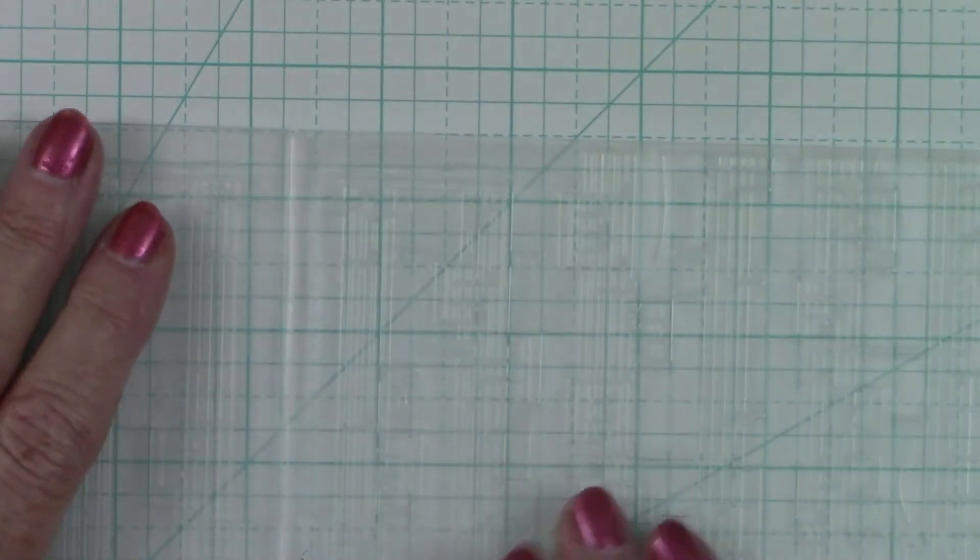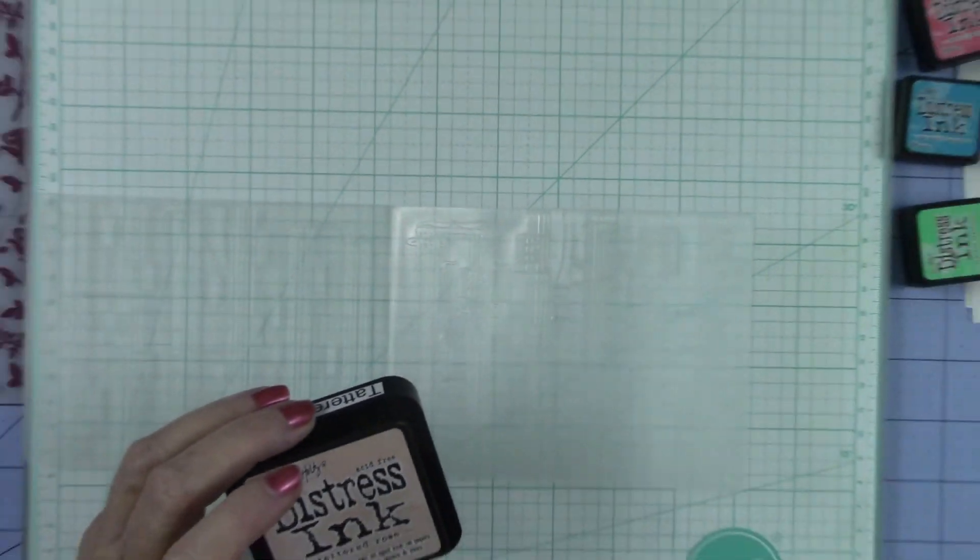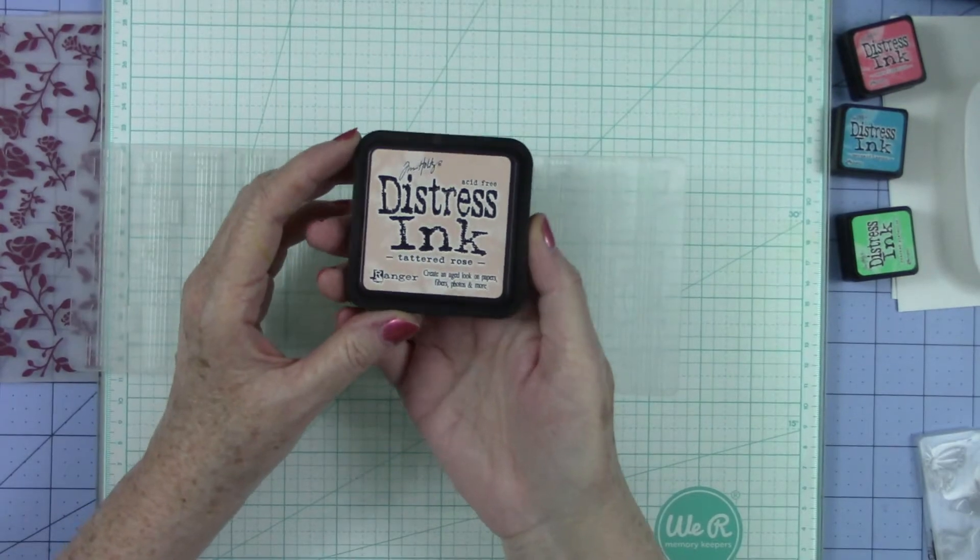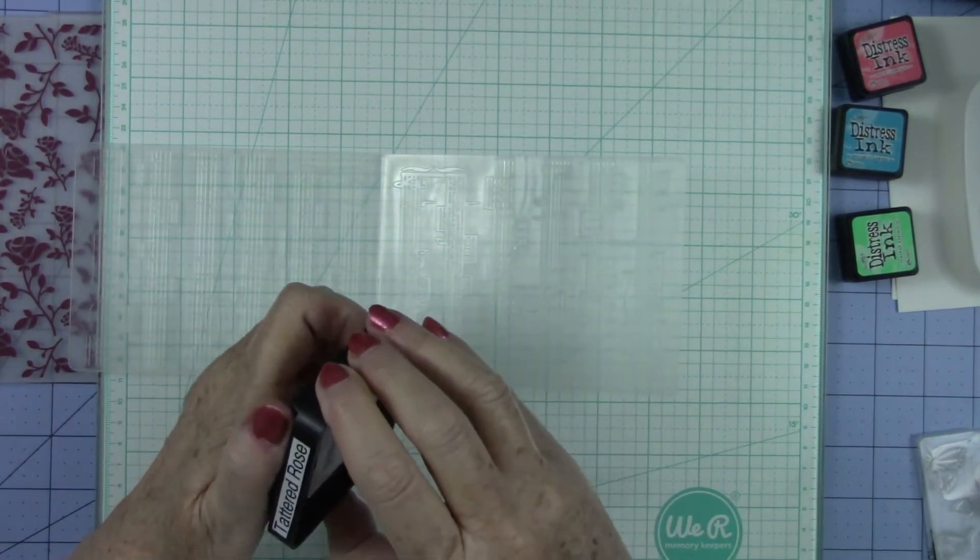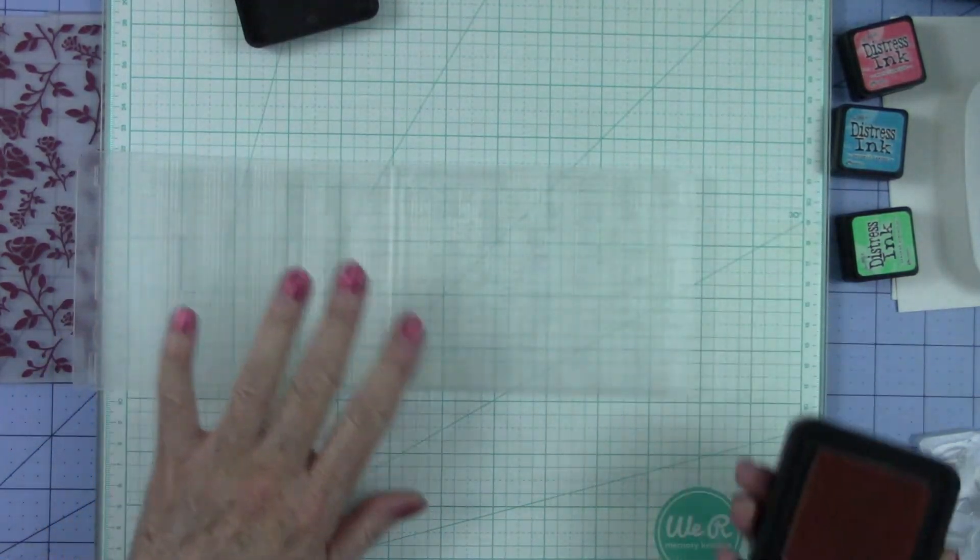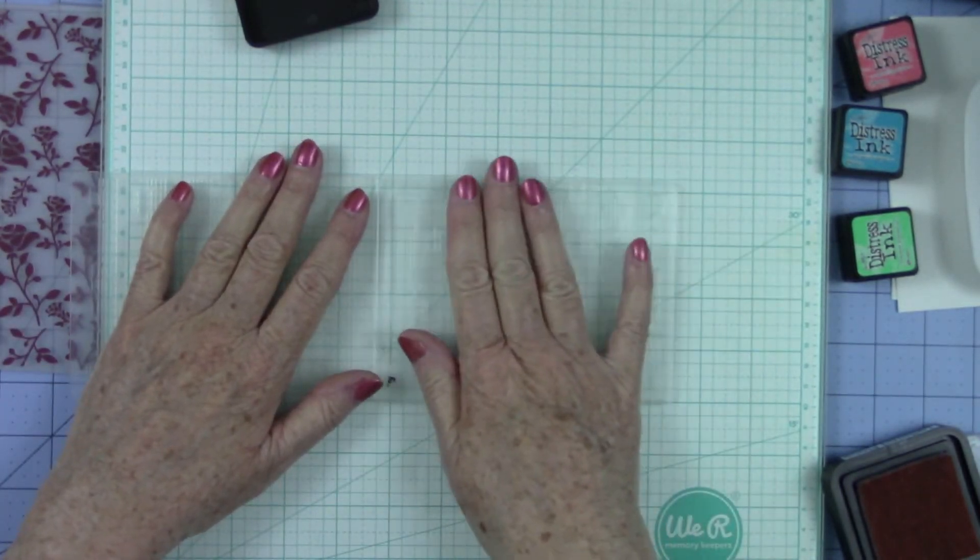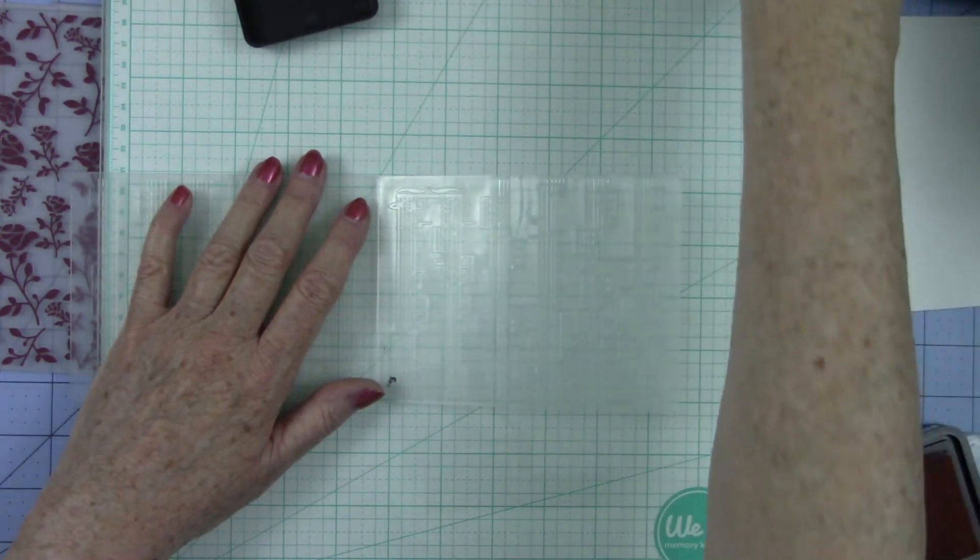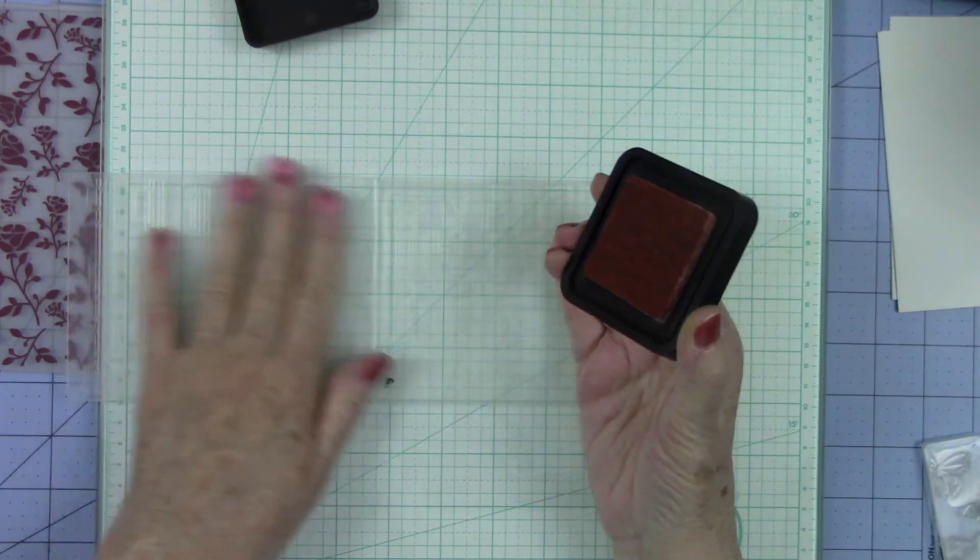Now again, when you open these up, you will feel one side that's flat. It's not completely flat, so don't let that confuse you. One side is much more raised than the other side. So if you're going to do your background paper, this is where you want your ink to go. So I am going to go with a more muted color. Let's do, I want a pale pink. So let's do our Tattered Rose. This is a very pale.